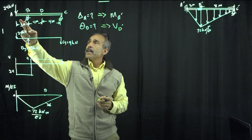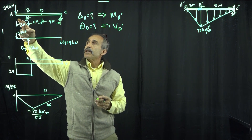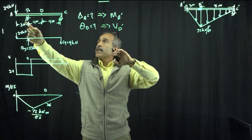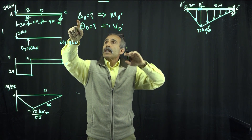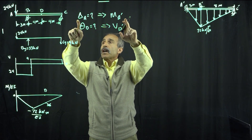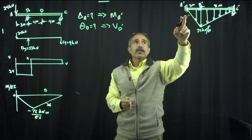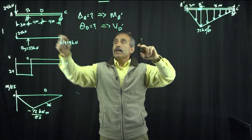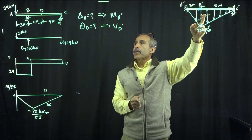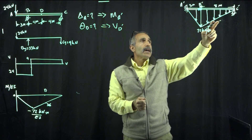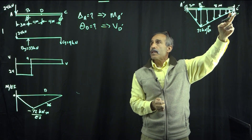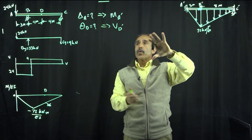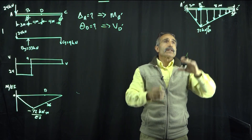Over here we have a free end. At a free end, we have a displacement, so in the conjugate beam I need to have a moment. The only support that can carry a moment is a fixed end — that's why the free end becomes a fixed end. The pin will remain the same, and the double pin over here remains the same. So now we have our conjugate beam.